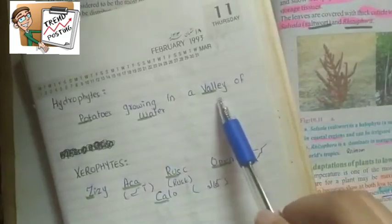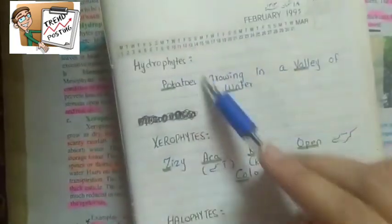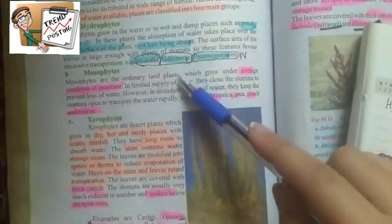Examples of hydrophytes include water lily and hydrilla growing in valleys of water. Mesophytes are what you see in daily life.